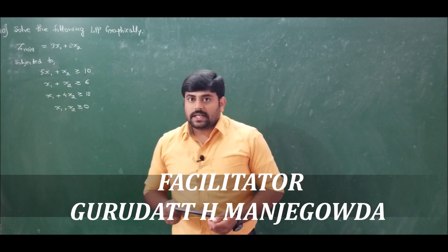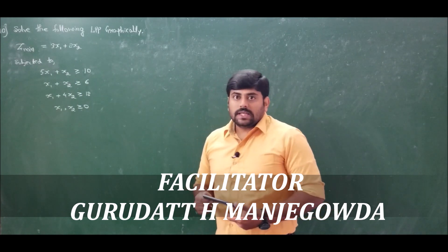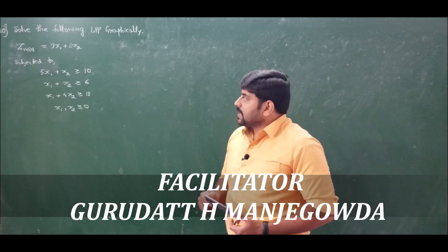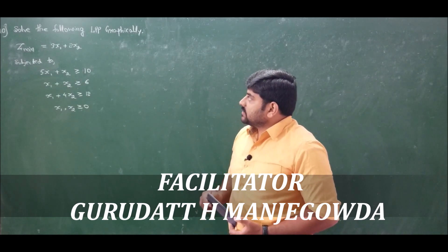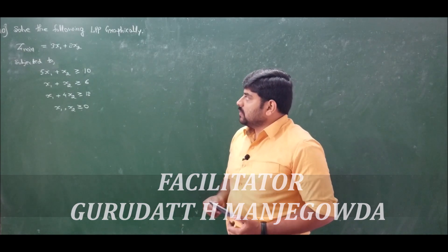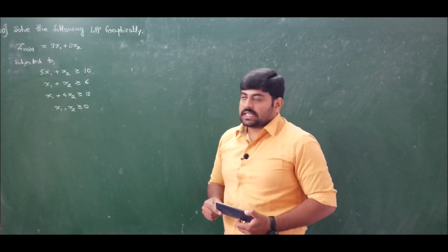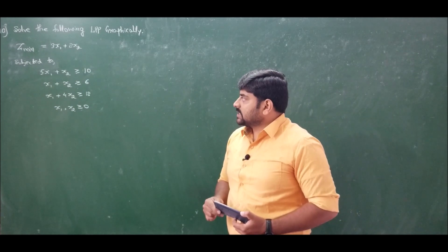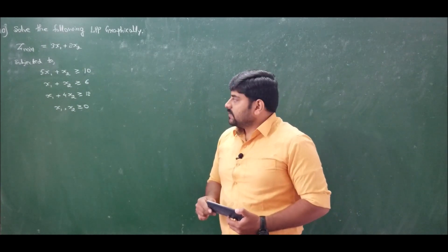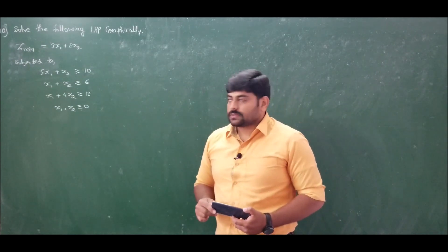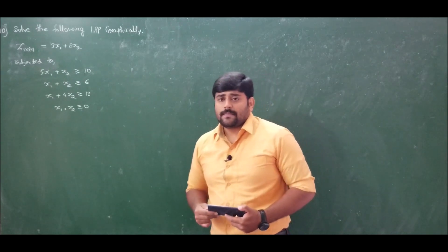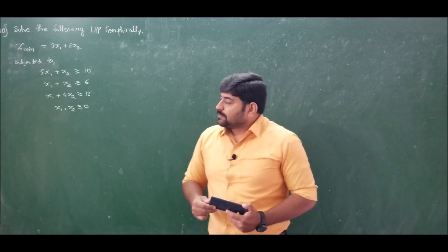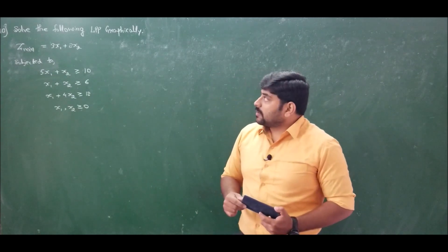Problem number 10 of our discussion on graphical approach for linear programming asks us to solve the following LPP graphically: Z minimum equals 3x1 plus 2x2, subjected to 5x1 plus x2 greater than or equal to 10, x1 plus x2 greater than or equal to 6, x1 plus 4x2 greater than or equal to 12, with x1 and x2 being positive values. So far we have solved maximization problems; now this is a minimization linear programming problem.